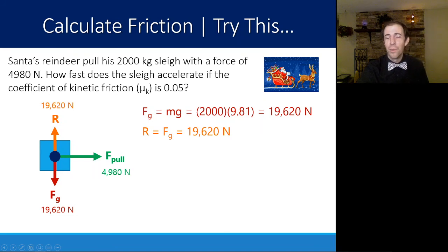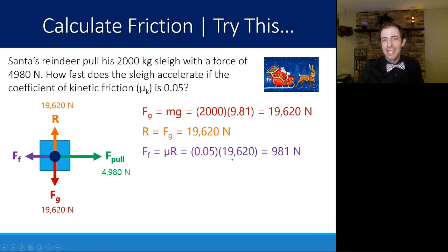That leaves us now with a force of friction. Force of friction has to counteract the motion. We assume we're moving in the direction that the reindeer are pulling. In this case, we're saying that the sleigh is accelerating, so there must be a net force. Force of friction probably isn't going to be as much as the force of the pull. But we can calculate exactly what it is because we know the coefficient of kinetic friction, which is 0.05, and we know R. So 0.05 times 19,620 gives us a force of friction of 981 newtons.